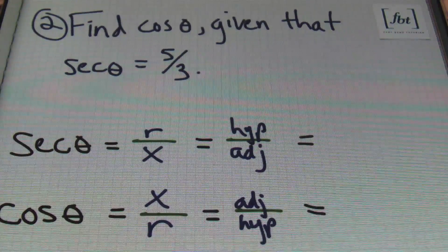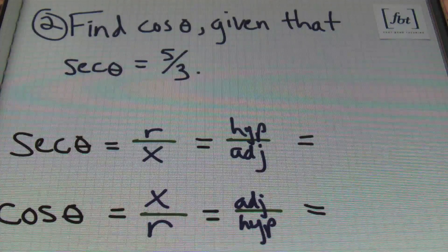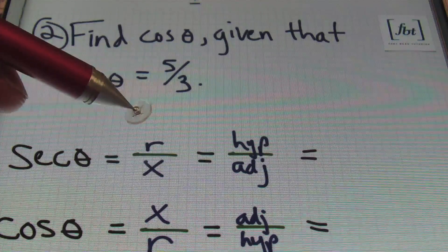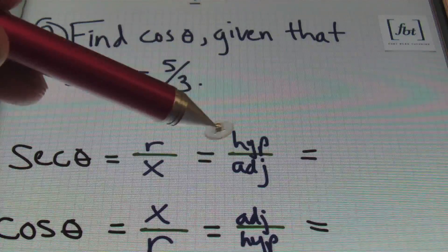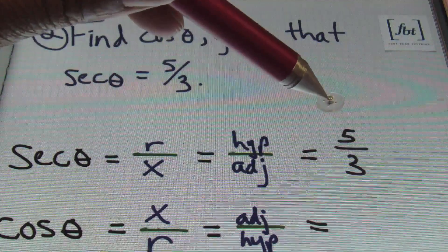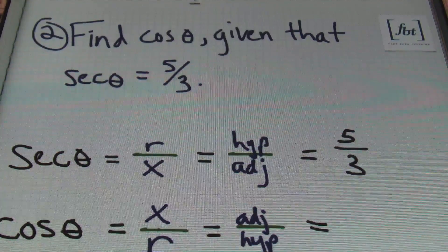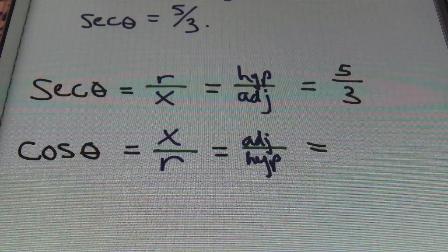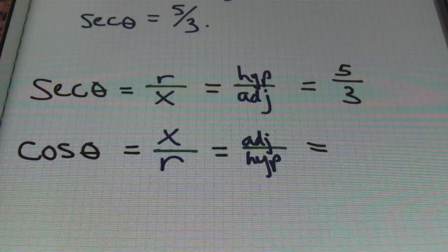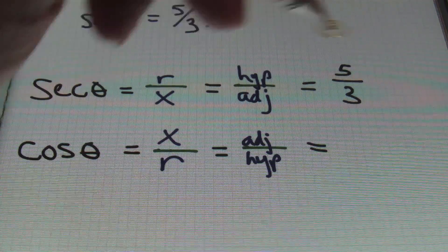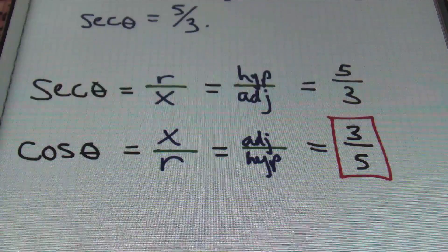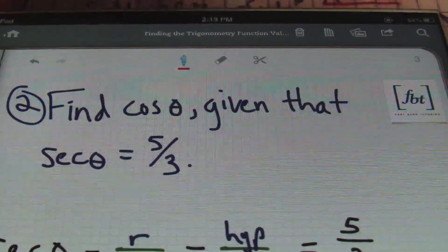Here in problem number two, it says to find cosine theta, given that secant theta equals to five-thirds. To solve for cosine theta, we're making sure that we understand that secant theta — which is equal to r over x, which also means the hypotenuse over the adjacent side — is going to be five over three. This tells me that my r value is five and that my x value is three. Remember that cosine theta is the reciprocal of secant — it's x over r, or the adjacent side over the hypotenuse. So all I have to do is just flip this answer to find out what cosine theta equals to: three-fifths, and that's my result.